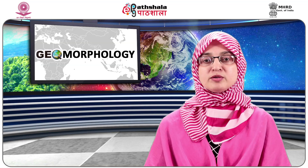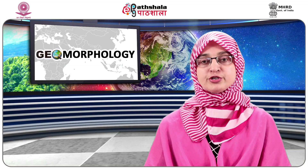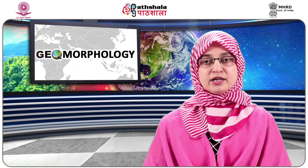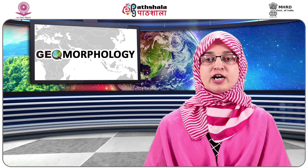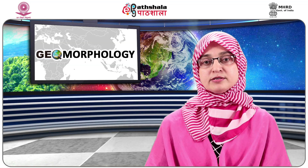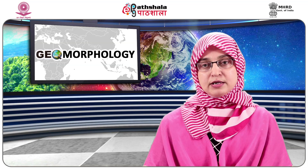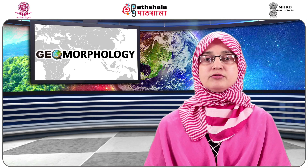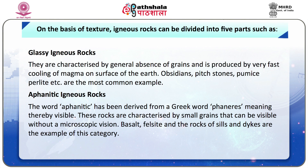Number 2: classification of igneous rocks on the basis of texture. Igneous rocks can be divided into 5 types. Number 1: Glassy igneous rocks are characterized by a general absence of grains and are produced by very fast cooling of magma on the surface of the earth. Obsidians, pitch stones, pumice, pearlite, etc. are the most common examples.